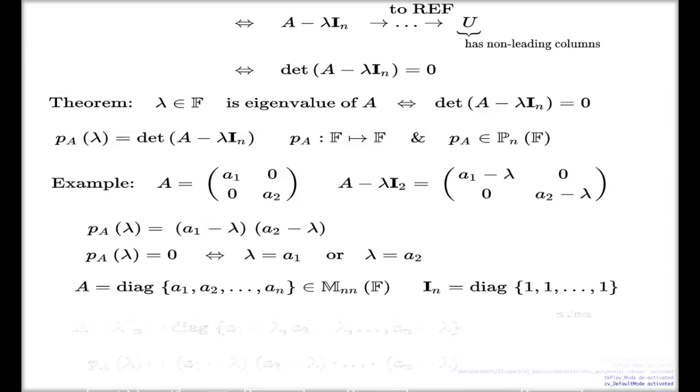It's a diagonal matrix with the entries 1, 1, 1, 1, 1 on it, on the diagonal. 1 here repeated n times. It's really efficient notations for the diagonal matrices, this diag thing. Now, look at this.